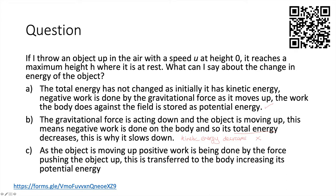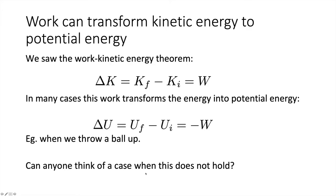As the object moves up, there is no force pushing it upward — we've thrown it up and the only force acting is gravity. Work can transform kinetic energy to potential energy. The work-kinetic energy theorem tells us the change in kinetic energy equals the work done on the body. The change in potential energy equals the negative of the work done. So when we throw a ball up, its kinetic energy decreases and its potential energy increases by the same amount.